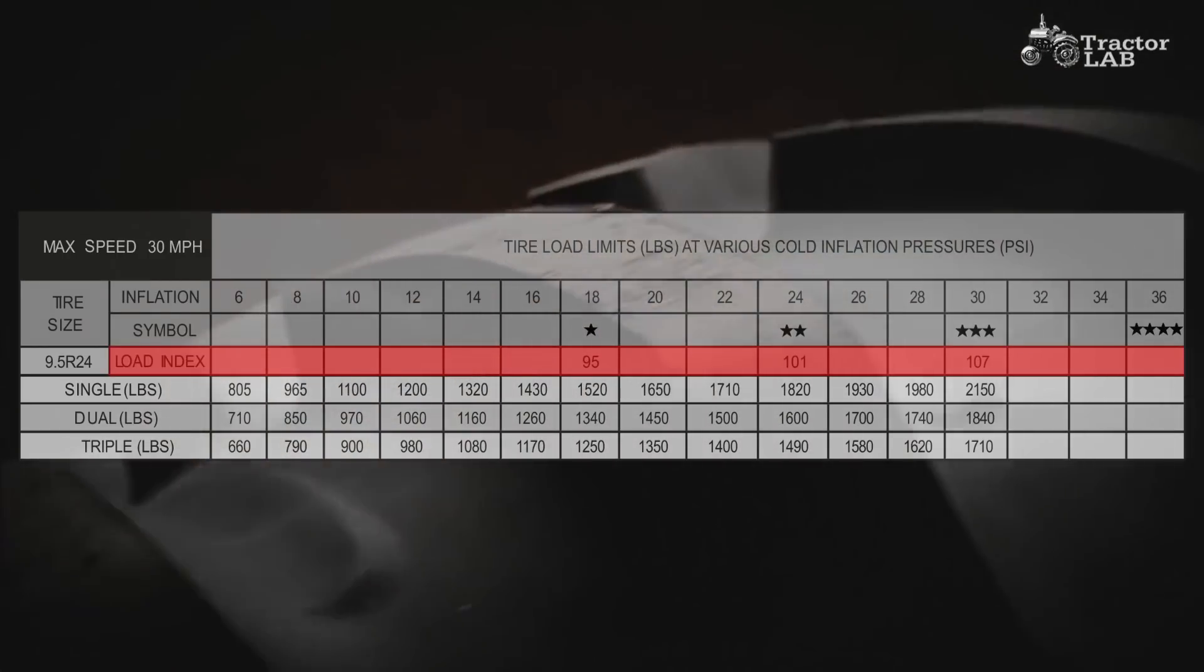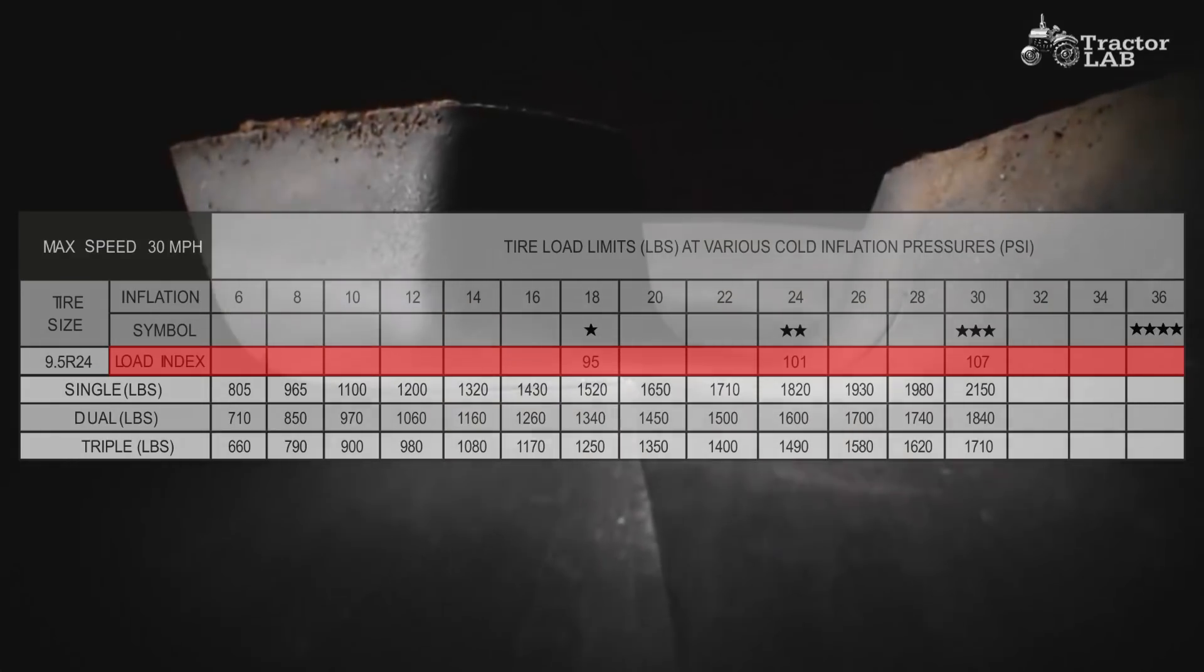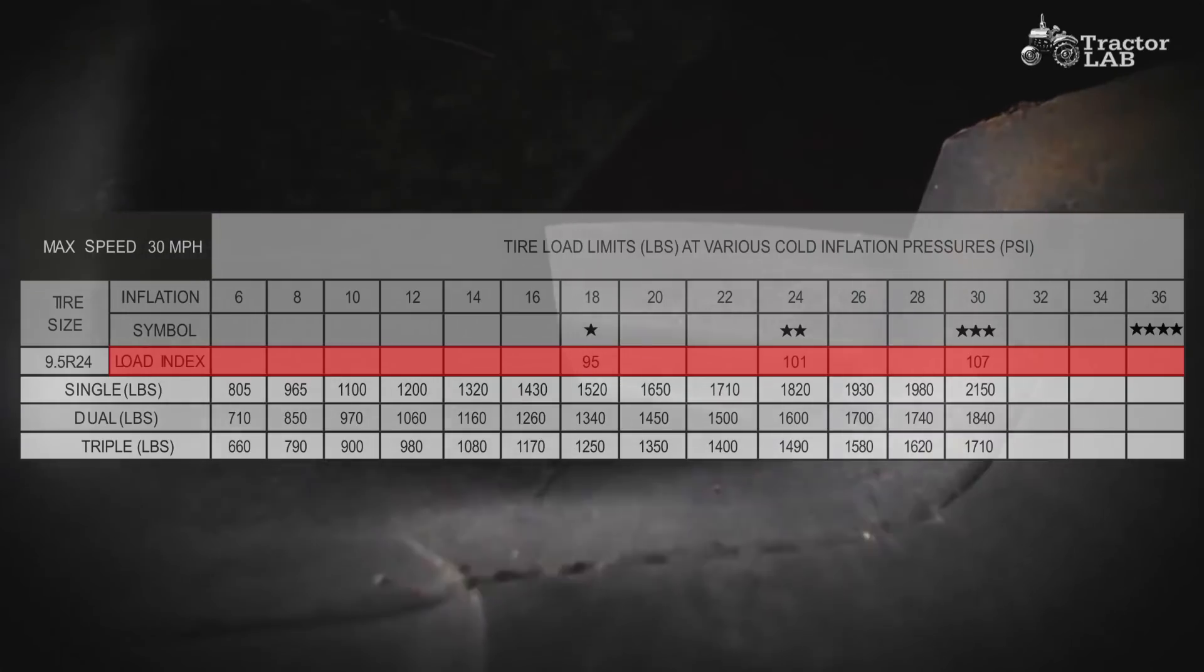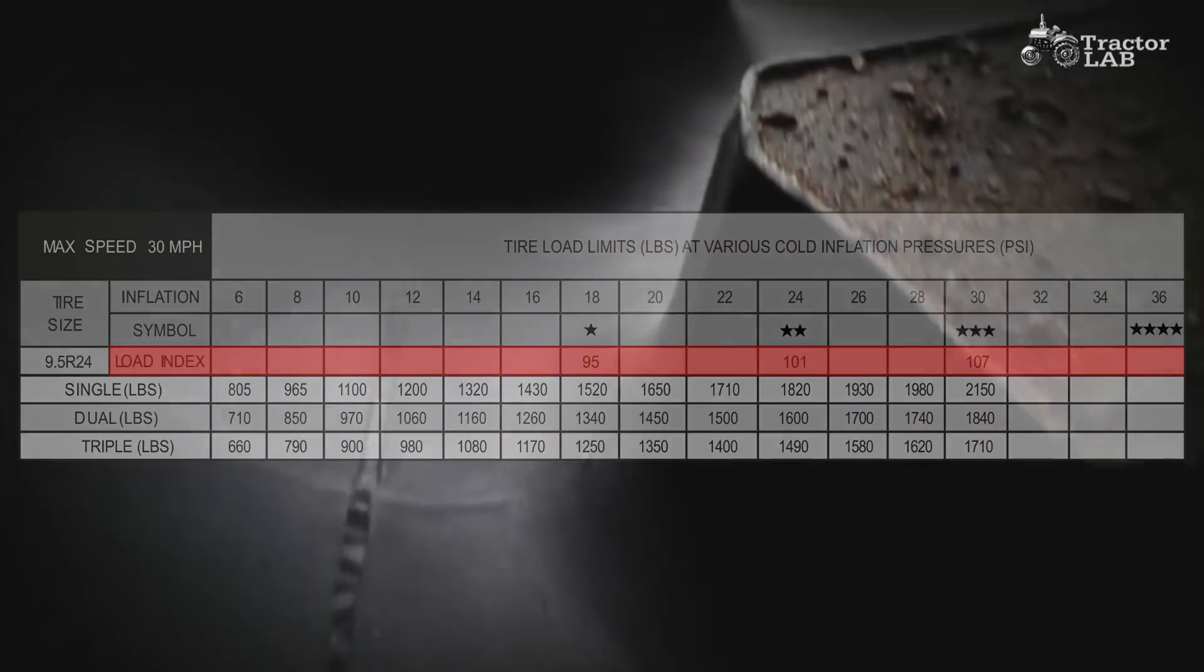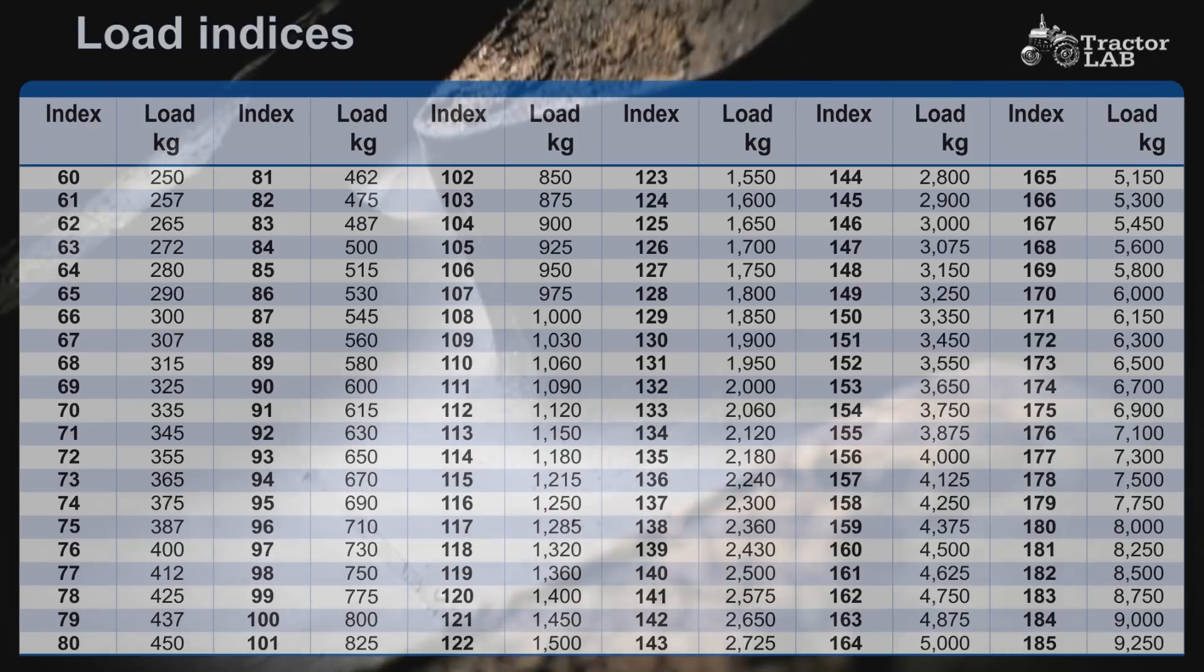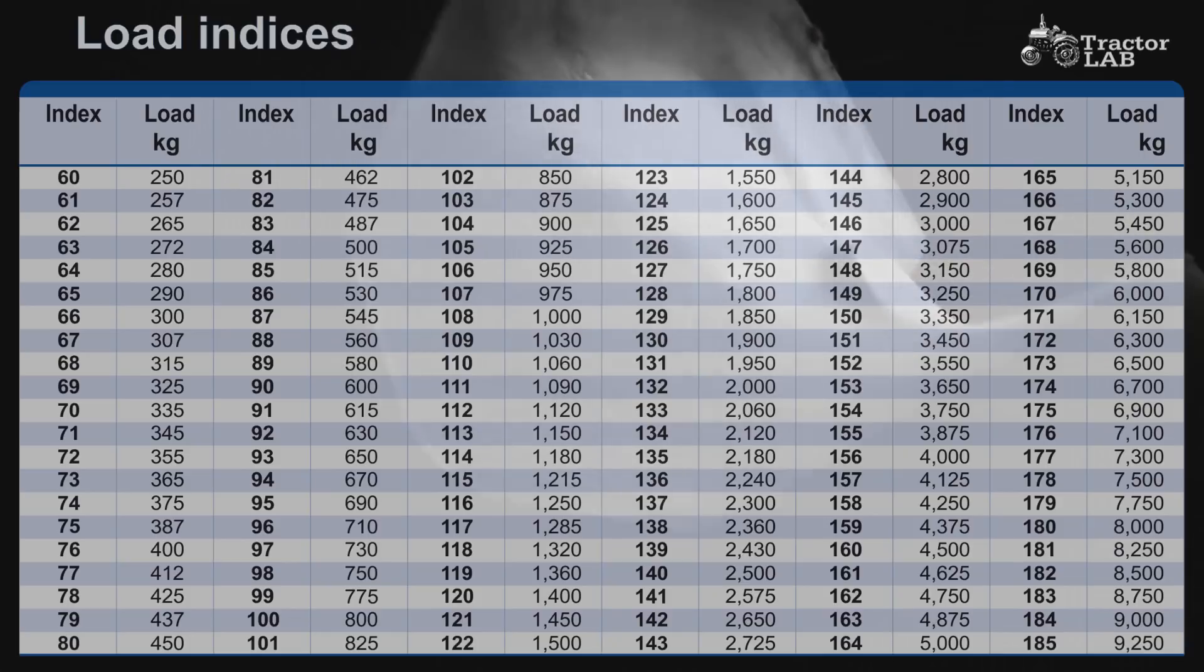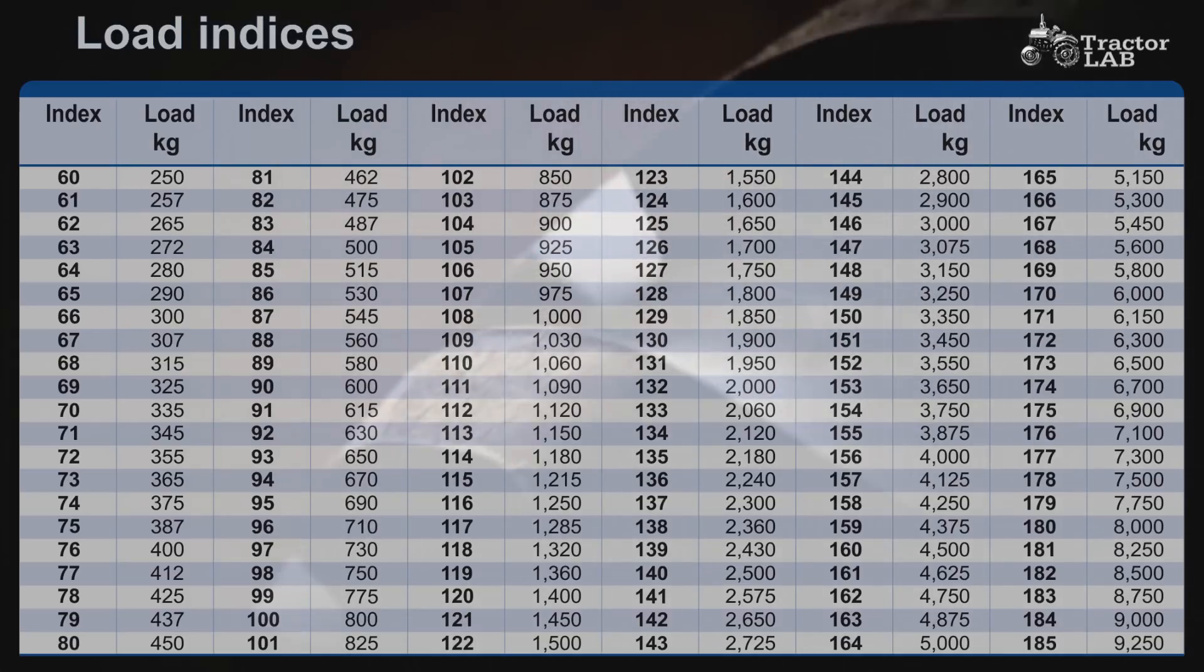Load index used with metric radials. Load index is an indication of rated load with each load index number corresponding to a certain load. If two tires have the same load index, they will carry the same load, but not necessarily at the same inflation pressure.